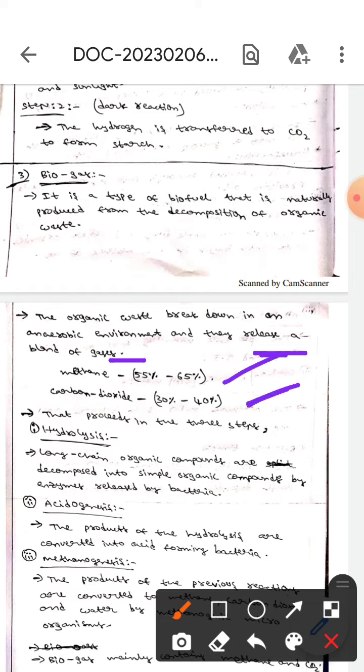It contains methane, 55% to 65%, whereas carbon dioxide is 30% to 40%. This process will be taken in three steps.